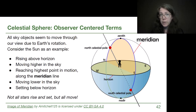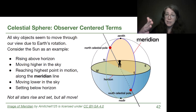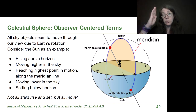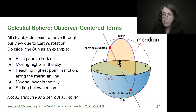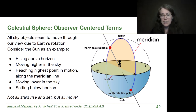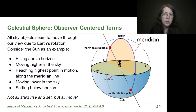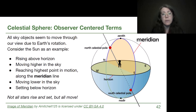The north celestial pole is Earth's north pole projected into space — that's where we find the north star. So the meridian goes through the north star. The south celestial pole is Earth's south pole projected into space, and from Grand Rapids we cannot observe it. With these three observer-centered terms — zenith, meridian, and horizon — we can start to picture what happens when a star moves through our field of view.